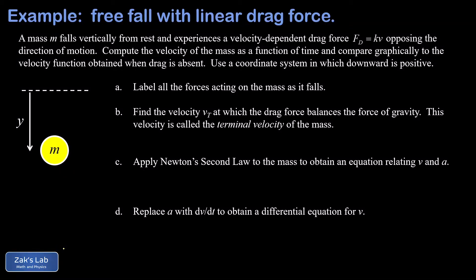In this video we're looking at a free fall problem where the mass experiences a drag force opposing the direction of motion. This drag force is velocity dependent — it increases as the speed of the object increases. The model we're using is a linear drag force, meaning the magnitude of the drag force is proportional to the speed by some constant k. A quadratic drag force is actually more realistic for high speeds, but we're solving the linear drag case first.